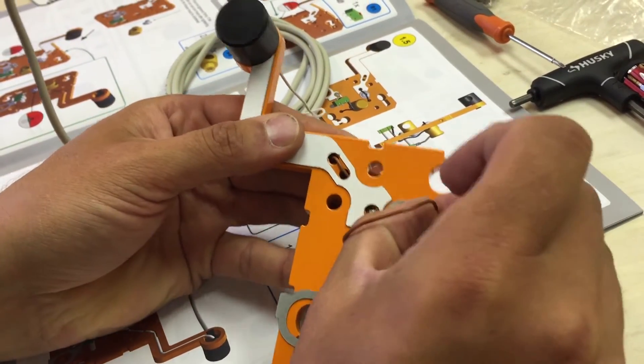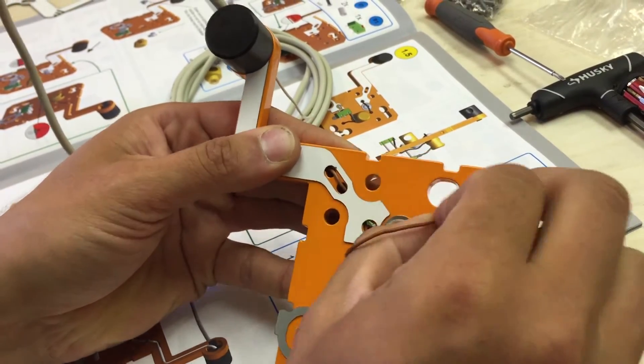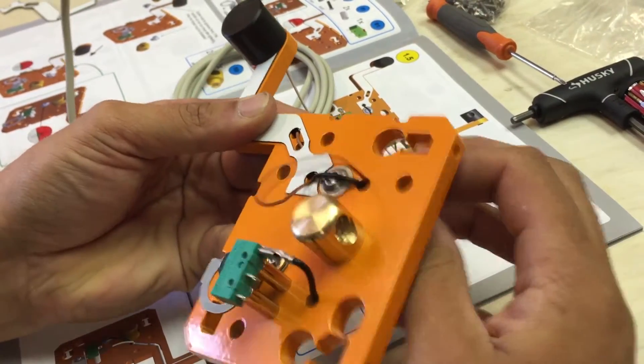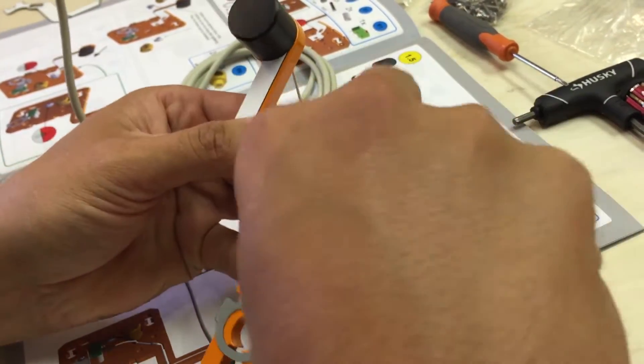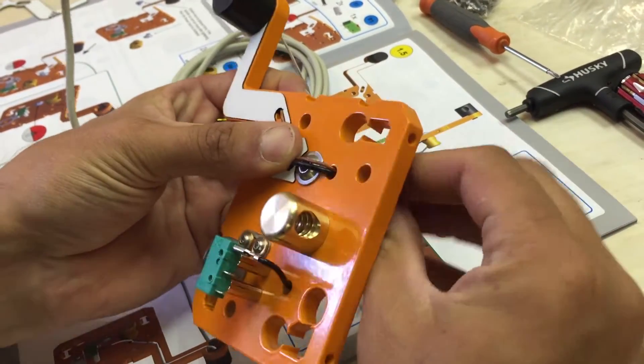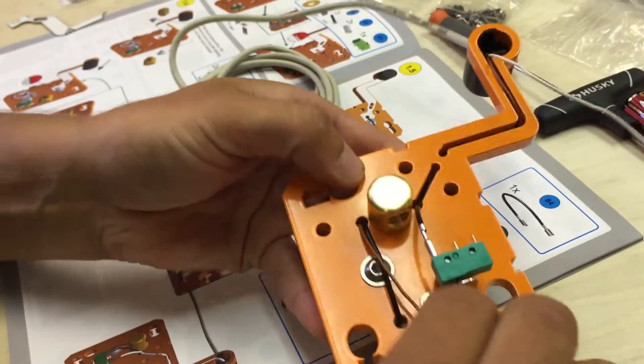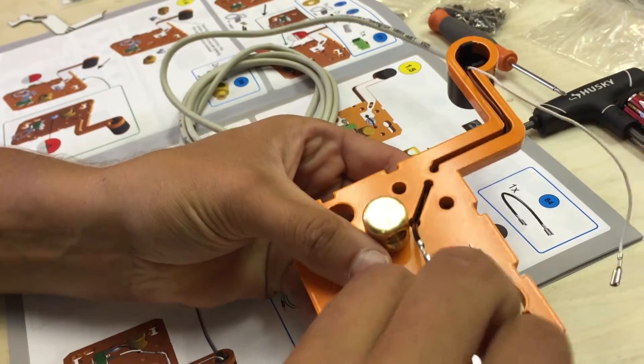It's going to go over, just like the black wire, over the Allen screw. And it's going to come out again, over this Allen screw again.